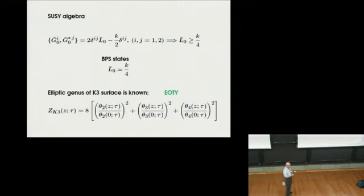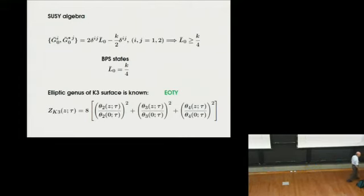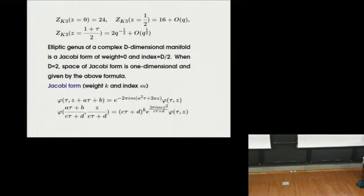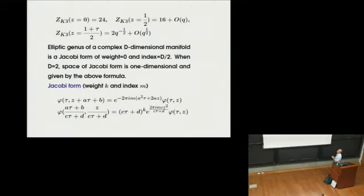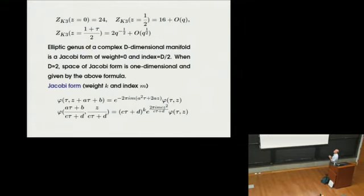We computed this quantity about 20 years ago. The result involves Jacobi theta functions: theta_2(z, τ) divided by theta_2(0, τ)^2, plus theta_3 squared and theta_4 squared, times an overall factor. When you look at this quantity and set z equal to zero, all these factors become 1, so altogether this becomes 24 — which is the Euler number of the K3 surface. When we set z equal to 1/2, we get something starting from 16 plus higher-order terms in q.